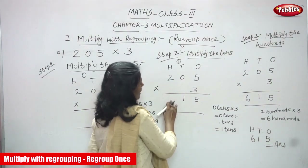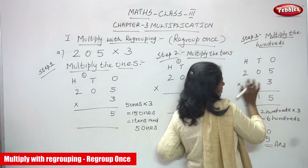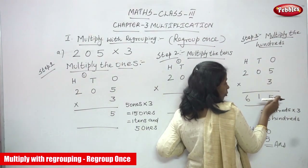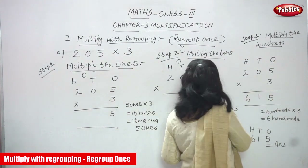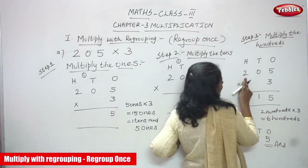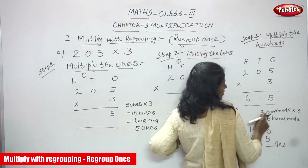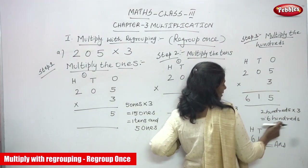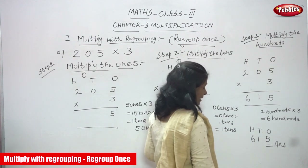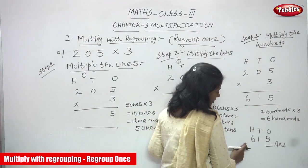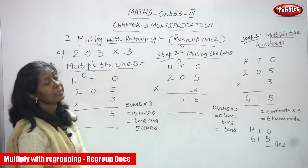There is no carry over for hundreds, so go to step three: multiply the hundreds. Write the ones and tens answers as they are. The hundreds place has 2, so 200 multiplied by 3 gives 600. There is no carry over; write 6. The answer is 615 — six hundreds, one ten, and five ones. This is the step-by-step regroup once method.